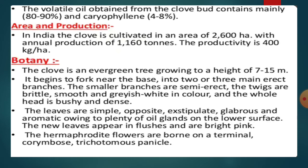Regarding area and production in India: clove is cultivated in an area of 2,600 hectares with an annual production of 1,160 tons. The productivity is 400 kg per hectare.